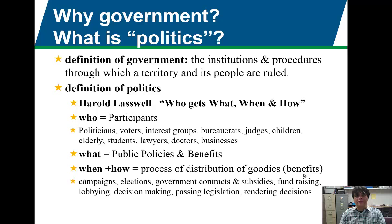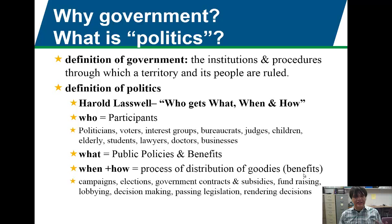The institutions within the United States would be Congress, the presidency, and the judicial branch. They all have different procedures, different protocols, and different ways that they function. But all these institutions and procedures come together to govern a territory and its people. We as citizens are the people, Texas and the other states are the territory, and they all have rule over this territory. All governments do have institutions, procedures, territories, and people.